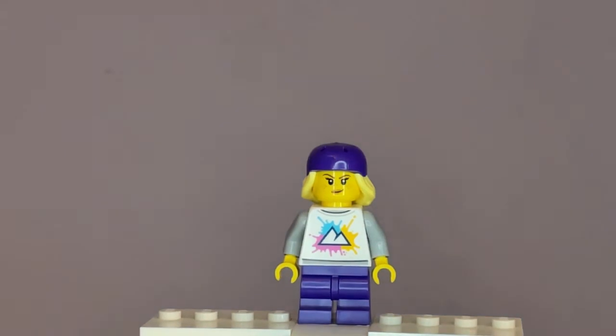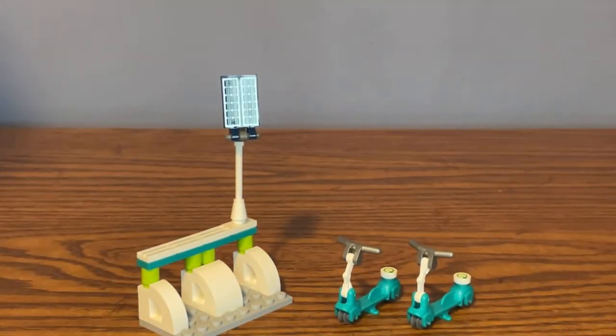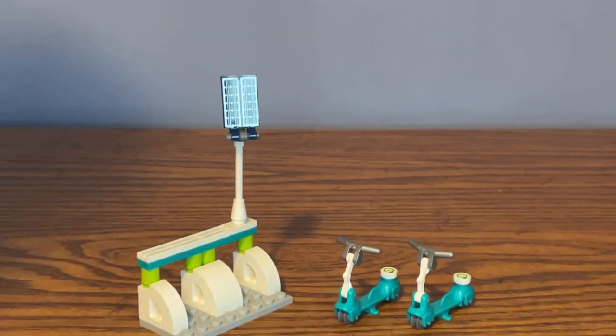That's basically it for all of the minifigures in this set. Let's go ahead and move on to the build. The builds we have here are the two electric scooters and the build for the charging dock.